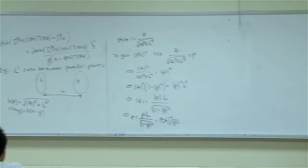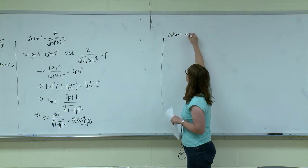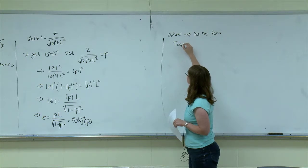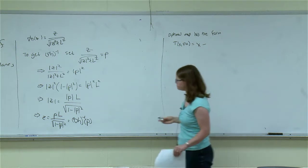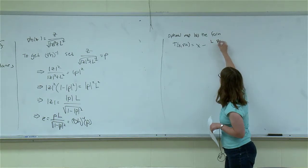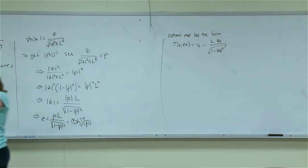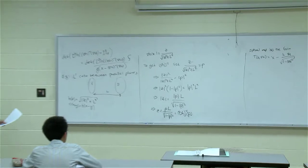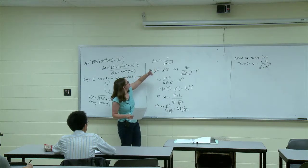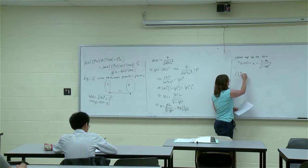That means I have an expression for my optimal map now in terms of u. So my optimal map is going to have this form: T of x is equal to x minus grad h inverse evaluated at grad u. So this is going to be x minus L grad u over root 1 minus grad u squared. I need the Hessian of h, so I need to take second derivatives. I'll give you the punchline and assume that you can work these out.